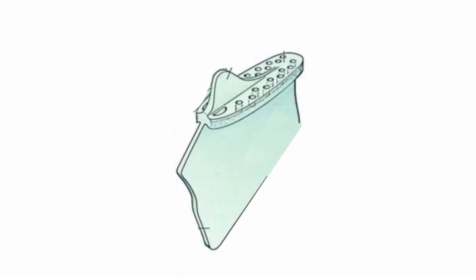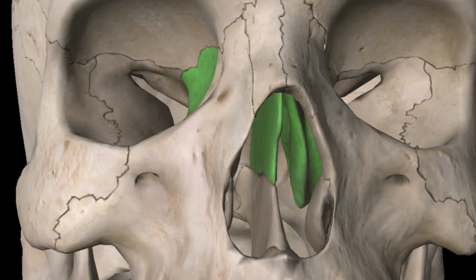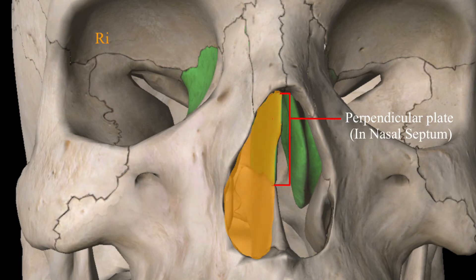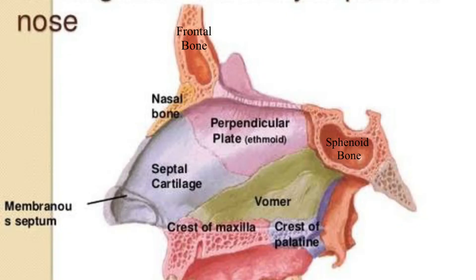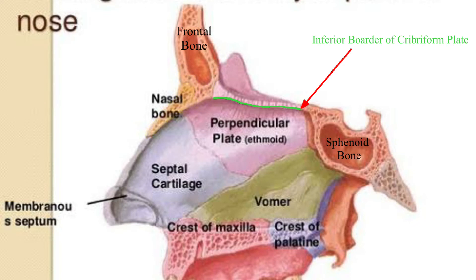The third part of the median vertical plate is the perpendicular plate. The perpendicular plate has contribution in making the nasal septum, separating the right and left airways of the nasal cavity. The other bone that has contribution in making the nasal septum is the vomer bone. The perpendicular plate extends from the inferior border of the cribriform plate. Anteriorly it is attached to the spine of the frontal bone and the crest of the nasal bone, inferiorly to the septal cartilage, postero-inferiorly to the vomer bone, and posteriorly to the sphenoid bone.